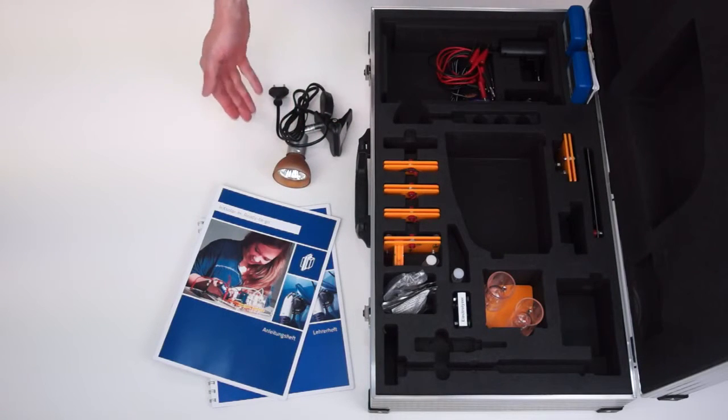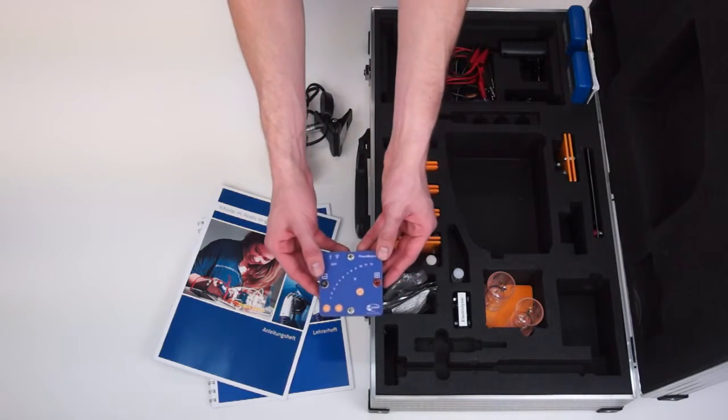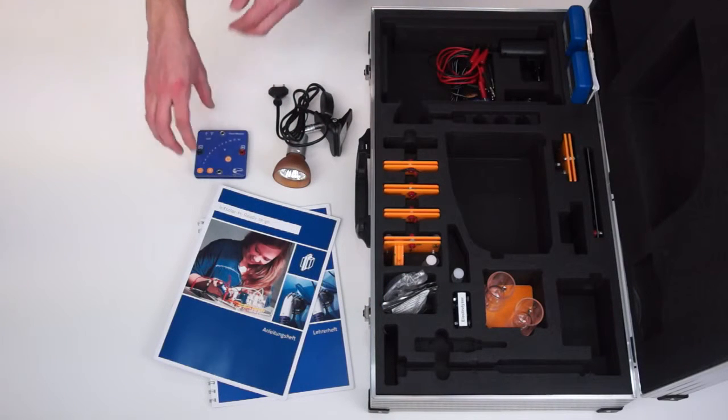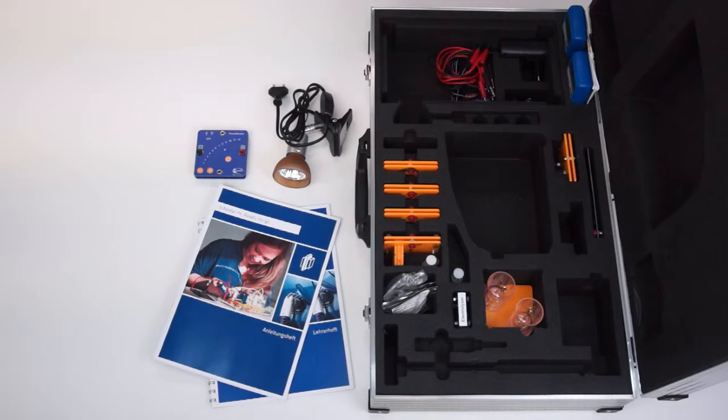The second option is to use the power module which we set aside at the beginning. The power module is a voltage source which can generate voltages between 0.5 and 12 volts in 0.5 increments. It can produce higher voltages than the solar cell and thus operate the hydrogen production faster.